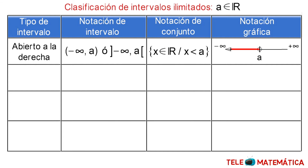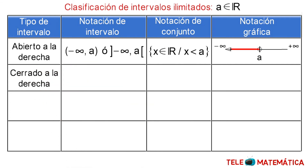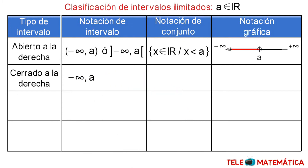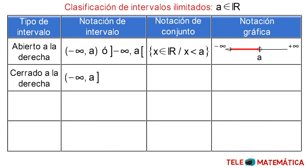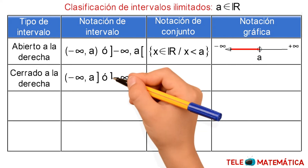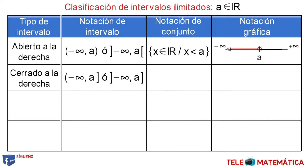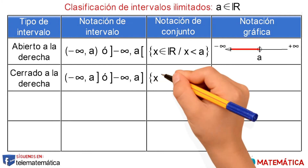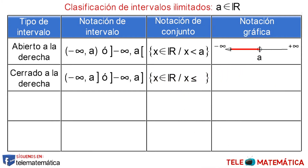Segunda clasificación: intervalo cerrado a la derecha, donde su notación de intervalo es desde menos infinito hasta A con paréntesis a la izquierda y corchete cerrado a la derecha, o desde menos infinito hasta A con corchete abierto a la izquierda y corchete cerrado a la derecha. Su notación de conjunto es, entre llaves, donde todos los valores de X pertenecen al conjunto de los números reales, tal que X es menor o igual que A.